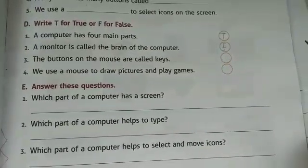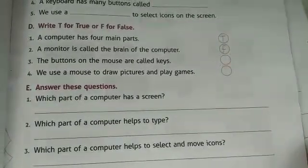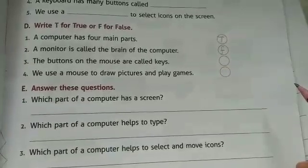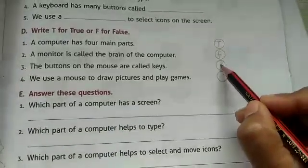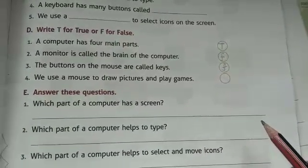Third is: the buttons on the mouse are called keys. Jo mouse pe buttons hote hain unko hum keys bolte hain. Is it true? No, this is false. Kyunki wo hooti hain buttons, or keys hooti hain keyboard pe.